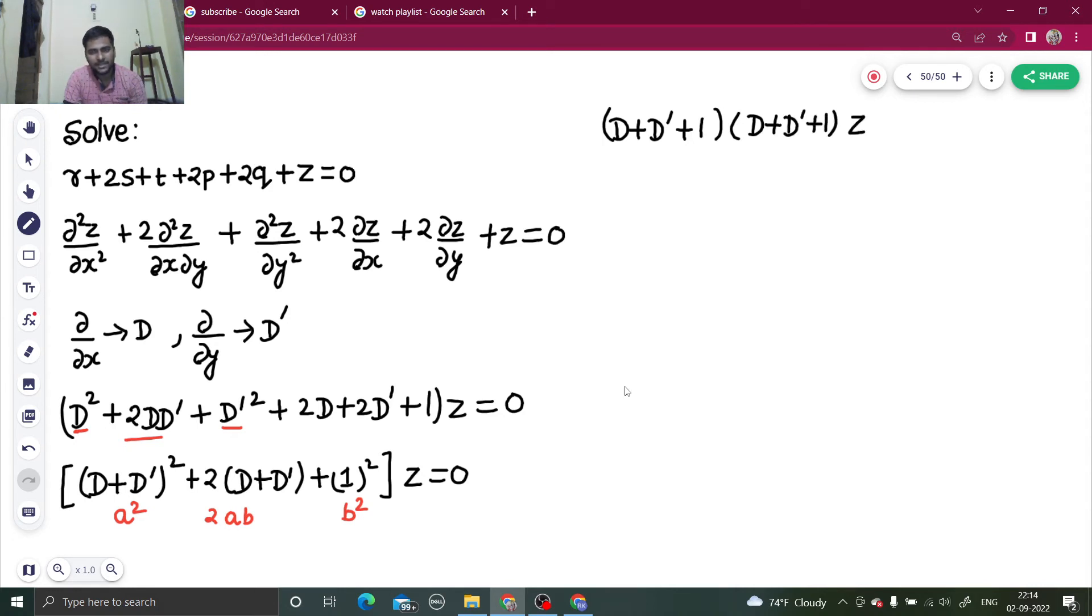This operating on z equals to zero. Why have I written two, not as square but as a product, to show you that you are going to get, if you compare this with D minus m D dash minus a, you are going to get in each case m as minus one. Because you will compare the coefficient of D dash in both the cases, so you are going to get m as minus one and a as minus one as well.